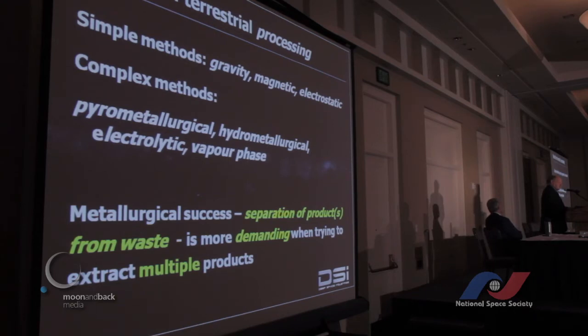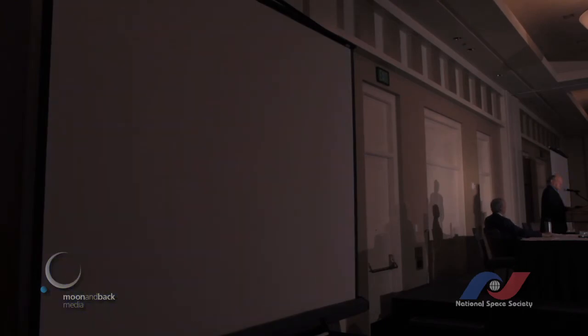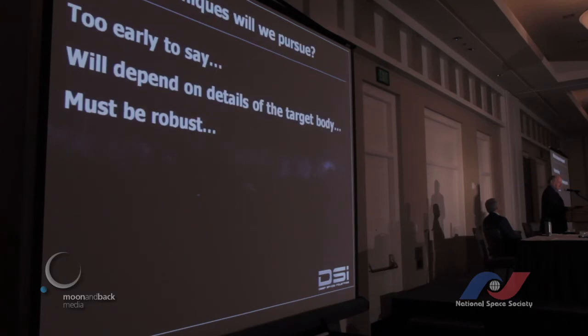From terrestrial processing, we have simple methods - gravity, magnetic, electrostatic separation - and complex methods: pyrometallurgical, hydrometallurgical, electrolytic. We have to choose between processing methods. Our pathway to commercialisation is fly-by missions, rendezvous and assay, sample return, then bulk mass return. It's too early to say which techniques we'll pursue, but we have to use these mental frameworks to sieve between them. Whatever we choose must be a robust mining method and a robust metallurgical processing and beneficiation approach. And that, ladies and gentlemen, is my story.